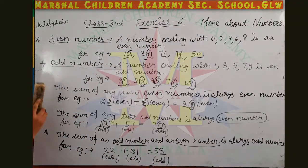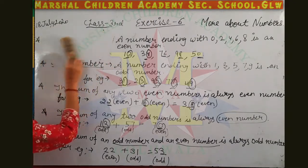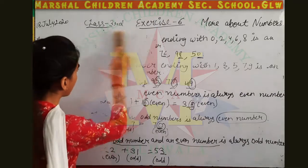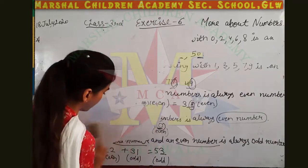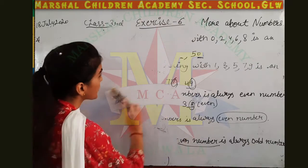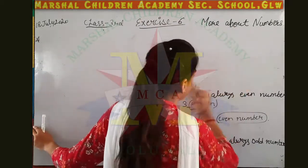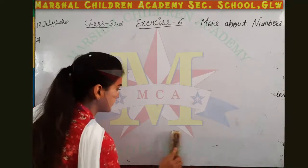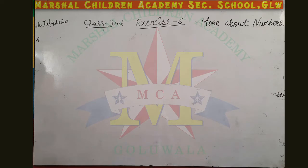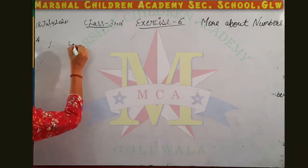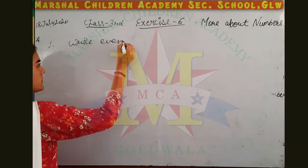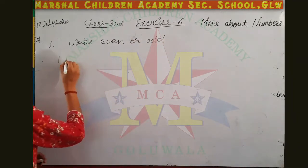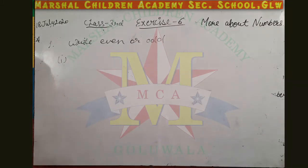Now I am going to teach you the first question of Exercise 6. In this question, we have to find out whether a number is even or odd. There are some questions given — write even or odd. Your first question is sixty-four.